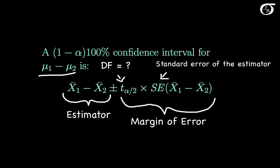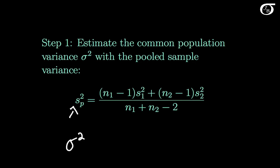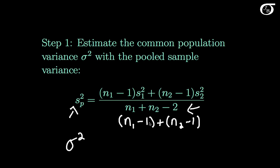Going back to our pooled variance: our estimator of the population variance is the pooled sample variance, and we divide by its degrees of freedom, n1 plus n2 minus 2. Why? We had two samples, and in each we had to estimate the population mean with the sample mean. The first sample has degrees of freedom n1 minus 1, and the second has n2 minus 1. We lose one degree of freedom in each, which works out to n1 plus n2 minus 2 — the degrees of freedom for our pooled variance and therefore for our t.